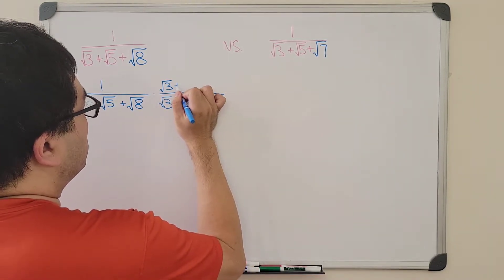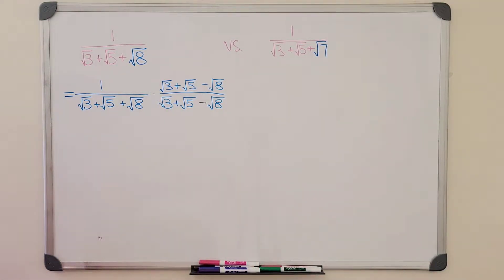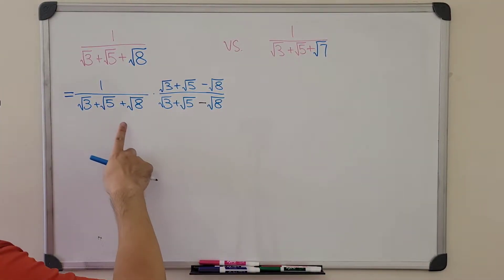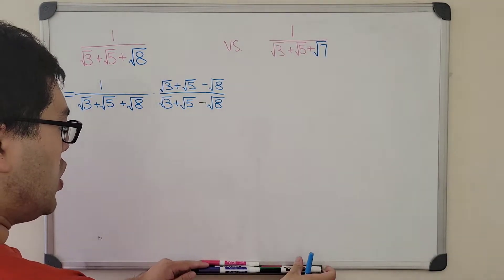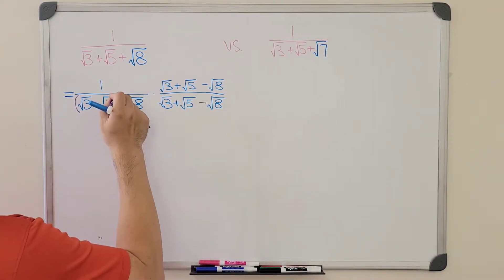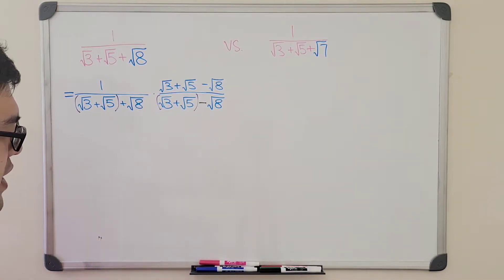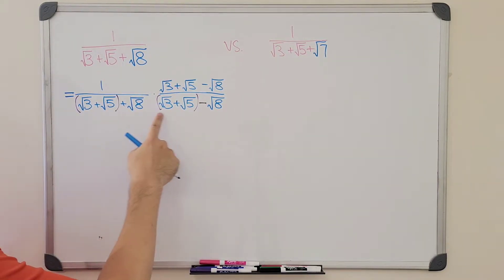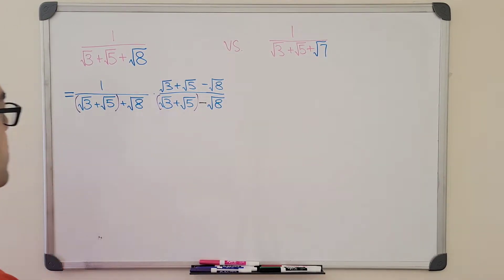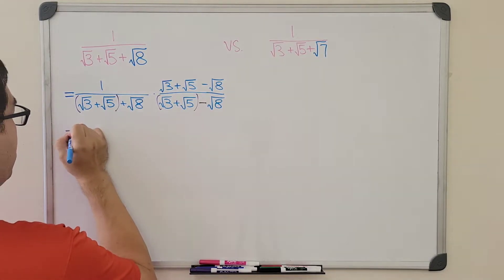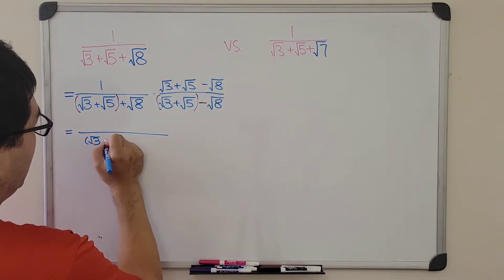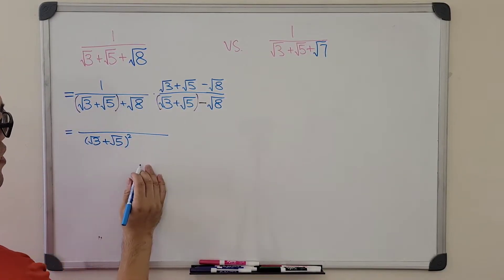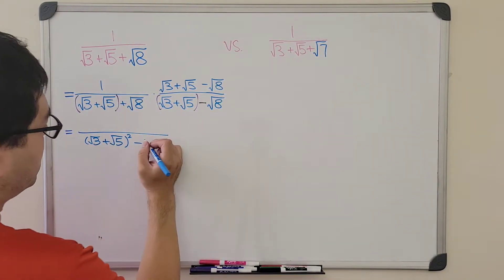And of course, we need to do the same thing on the top so that we're not changing the value of it. Why do we do that? Remember, we just said that 8 is equal to 3 plus 5. So if we're going to multiply the denominator, we can group it this way. We have radical 3 plus radical 5. Let's treat it as just one term or give a name of it, x. Then we have x plus radical 8 times x minus radical 8, which means we can now use the difference of squares to get x squared minus the radical 8 squared. So it means that we have x squared, which is radical 3 plus radical 5 squared minus the square of radical 8, which is just 8.